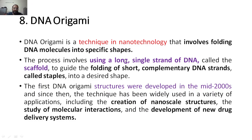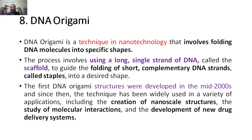The process involves using a long single-strand DNA, which is called as scaffold. Here you are calling this particular strand the scaffold — do not confuse it with tissue engineering scaffold. You are taking a single-stranded DNA — that is called scaffold. Now, to guide the folding, we are using the complementary DNA strands. Just as a reference — we know DNA is a double helical structure, where AGTC will complement each other. These complementary DNA strands will come and they are called staples.